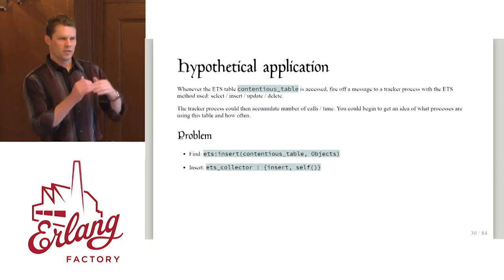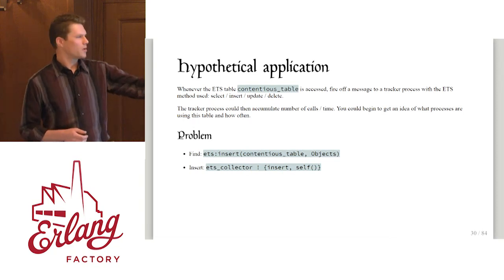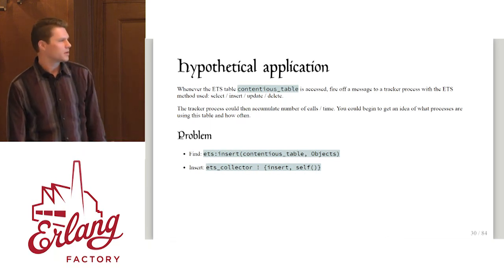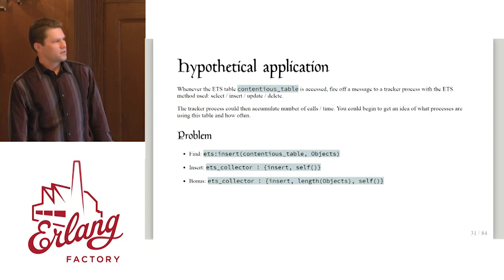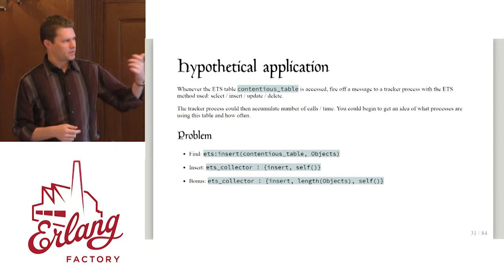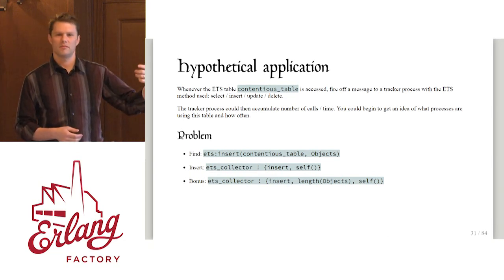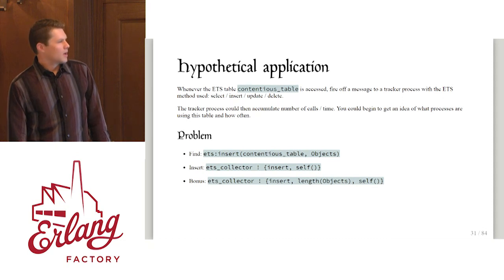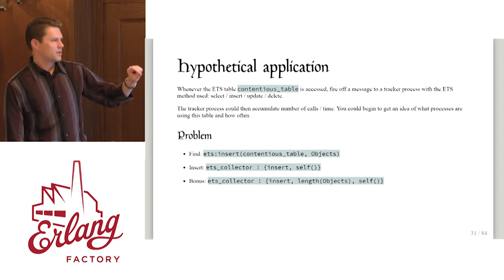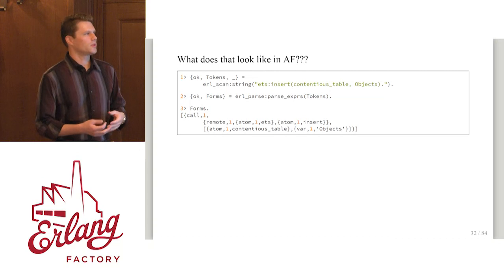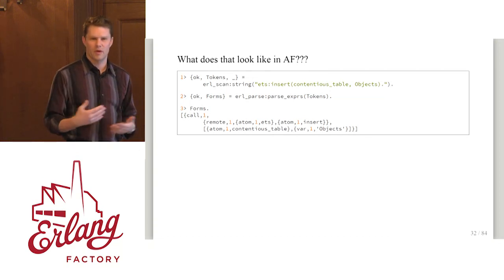We want to find calls to ets:insert contentious_table with some arguments, and we want to insert in this tree some new code. We'll have a named process ets_collector and we'll tell it we're doing an insert and who's doing the insert. This becomes more difficult because we're matching parts of this ets:insert call and putting it in our generated code. What if we could put in that message the length of the number of objects we're inserting? You can insert more than one object at a time, and that would be interesting.